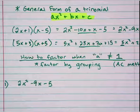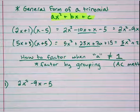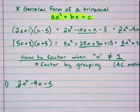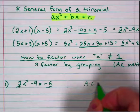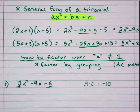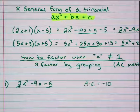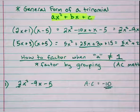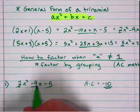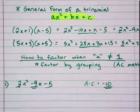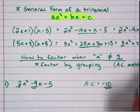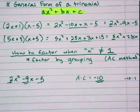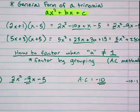In order to factor by grouping, I'm going to multiply the a value by the c value. A is 2 and c is negative 5, so a times c is negative 10. Now I'm going to think of numbers that multiply to negative 10 and add to negative 9. Those numbers are negative 10 and positive 1: negative 10 times 1 is negative 10, and negative 10 plus 1 is negative 9.